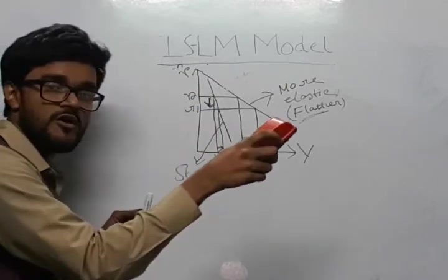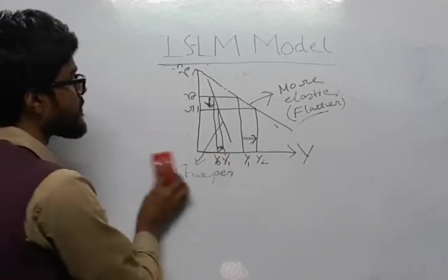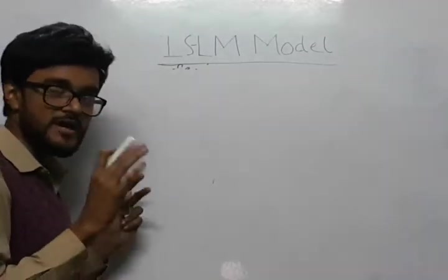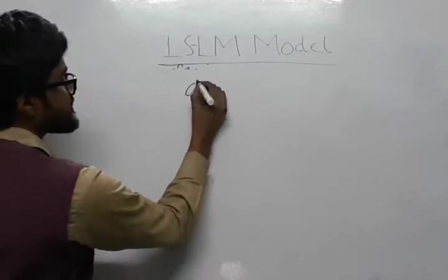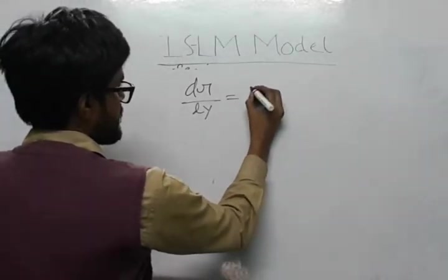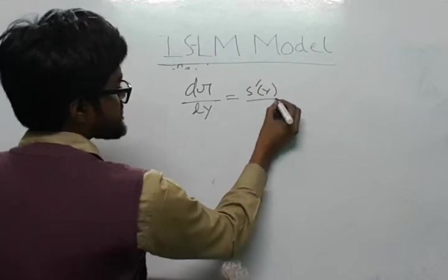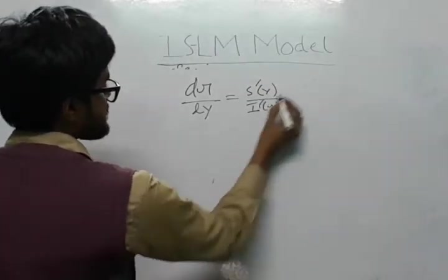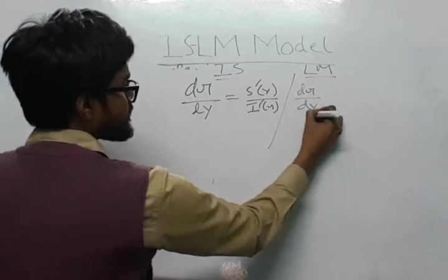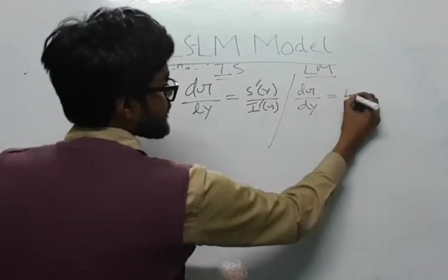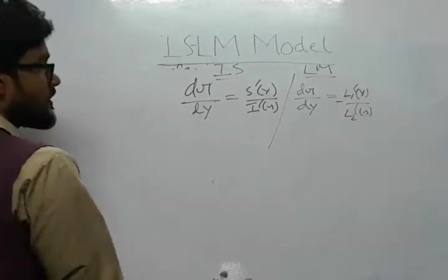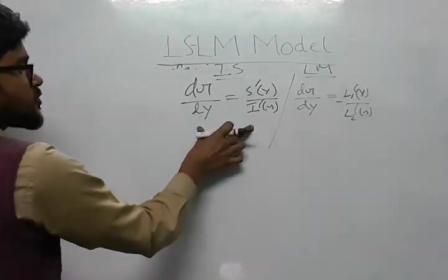The same thing goes for LM curve as well. So, this is the slope of IS and LM and the slope of IS curve, usual IS curve can be equationally written as dR by dY equals to L1 dash Y by L2 dash R minus. So, this is the slope of LM curve. This is the slope of IS curve.